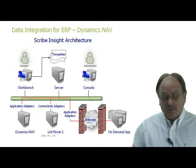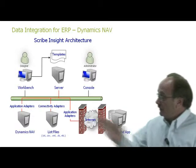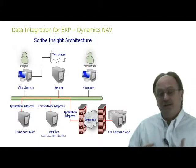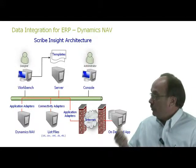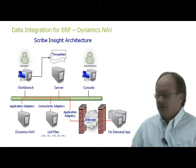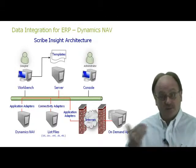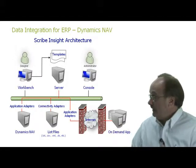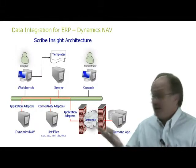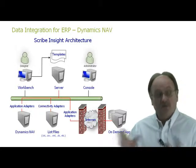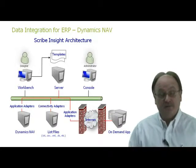Today we'll be focusing on an integration of data between list files. There's a whole host of different list files we support via connectivity adapters, including TXT files, CSV files, XML, and XLS — a whole host of different types. We support file-based integration, which is one of those four process event types.